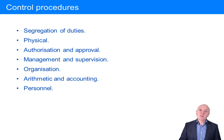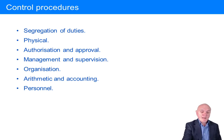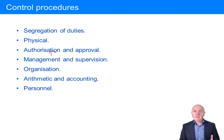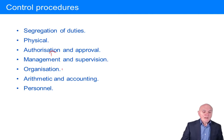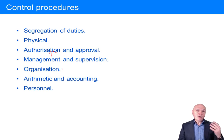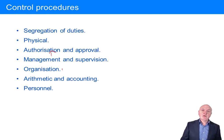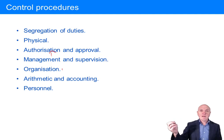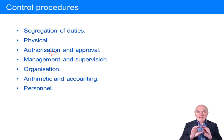Management and supervision: make sure people are following the rules and that authorisation and approval is working properly. Organisation: split it up so the person in charge of inventory is separate from the person in charge of production, with a whole separate area dealing with sales — independent areas.